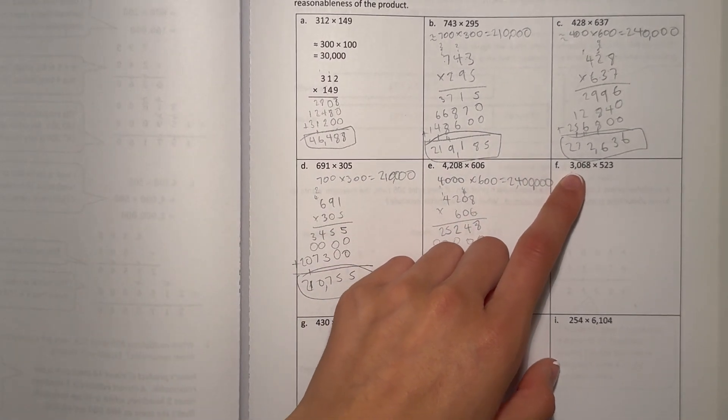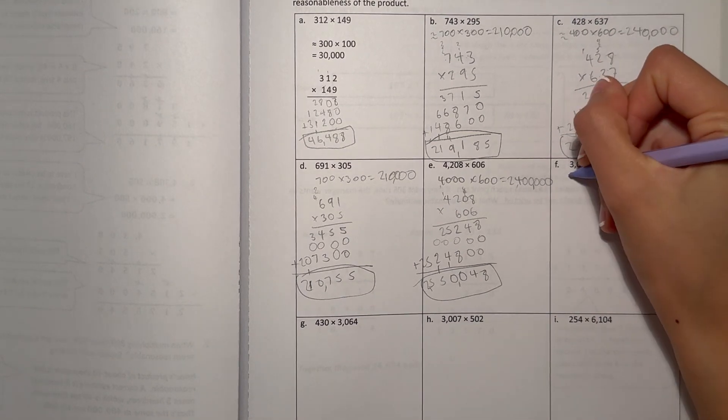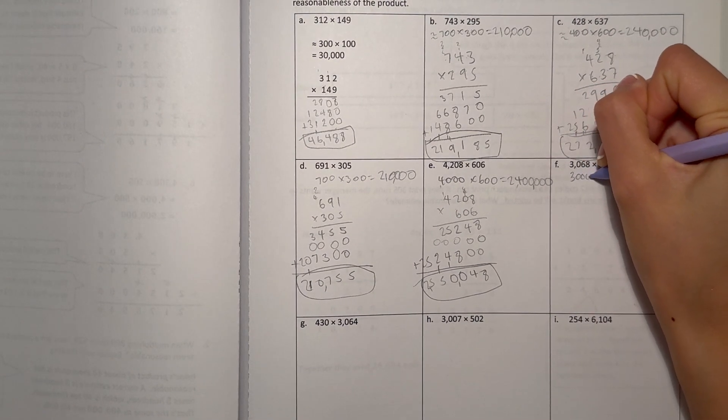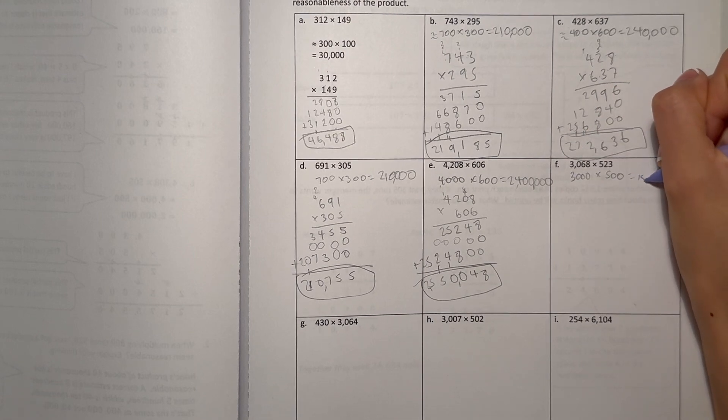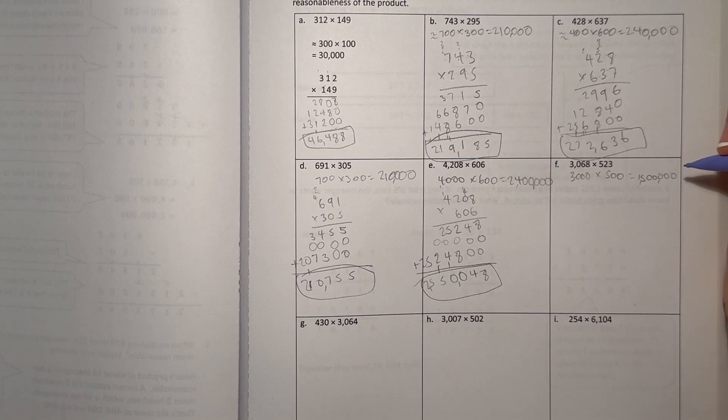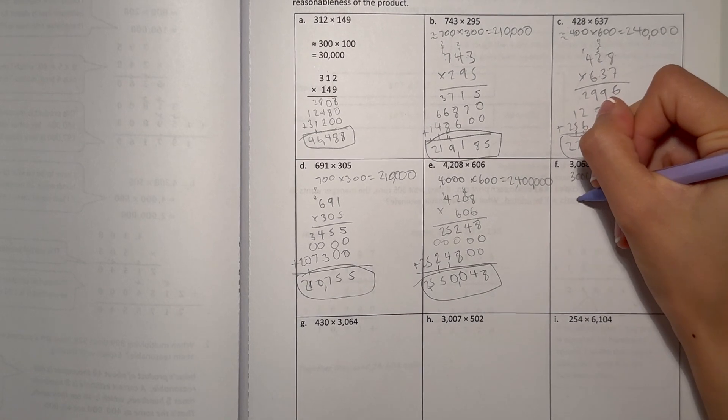Let's look at F now. 3,068 times 523. Our estimate would be 3,000 times 500. And that's 15. And add the zeros. 1,500,000. Now let's actually multiply.